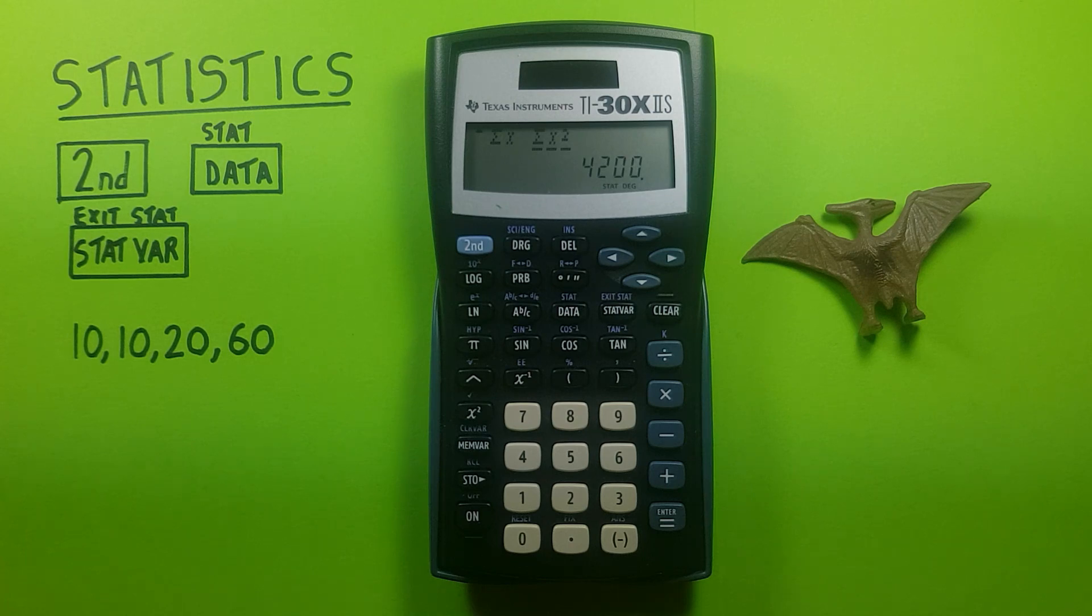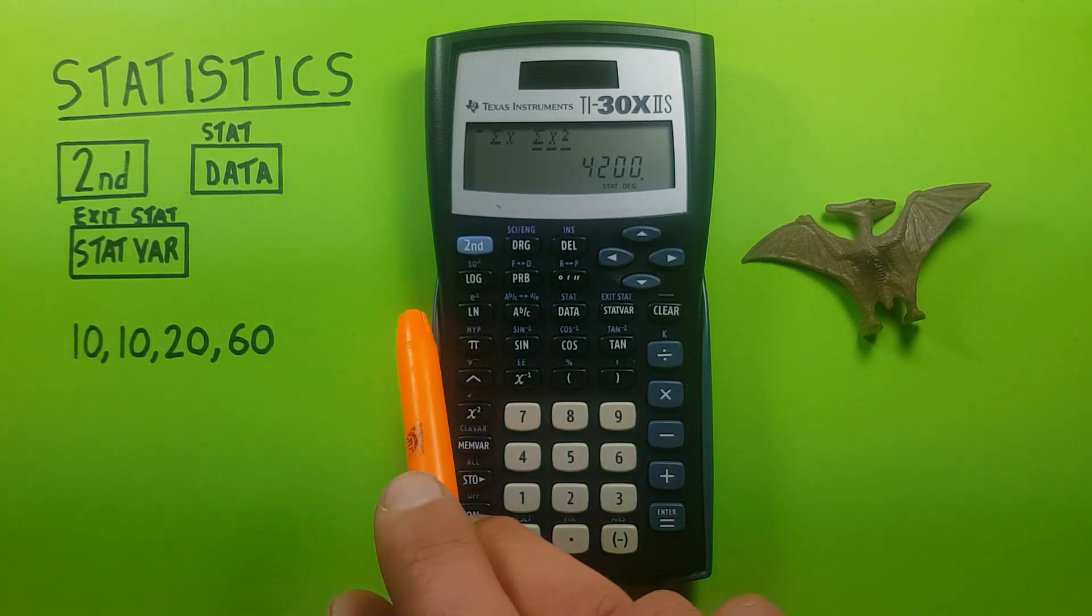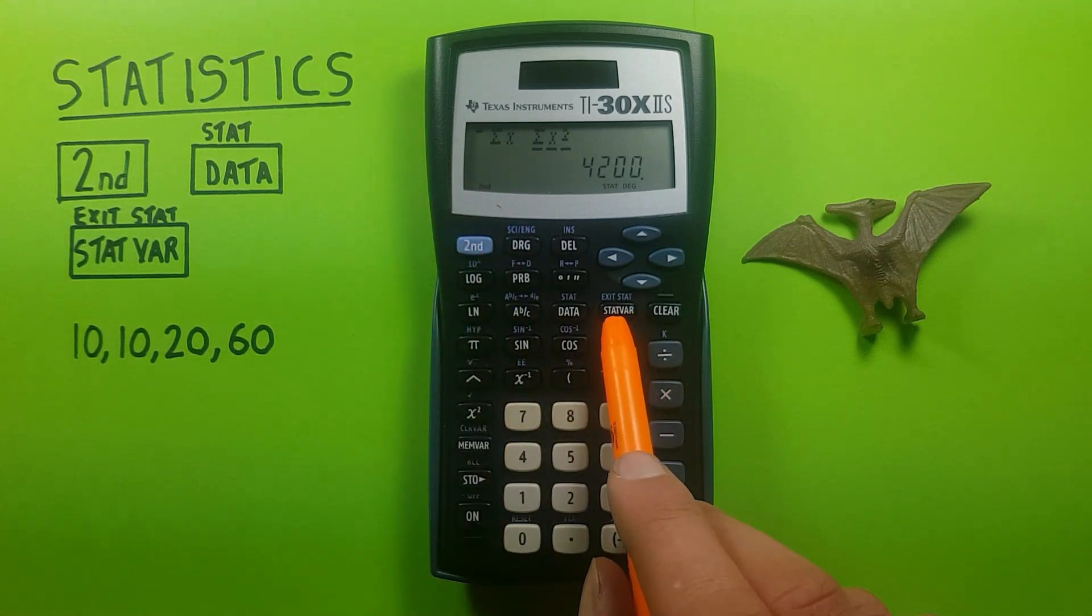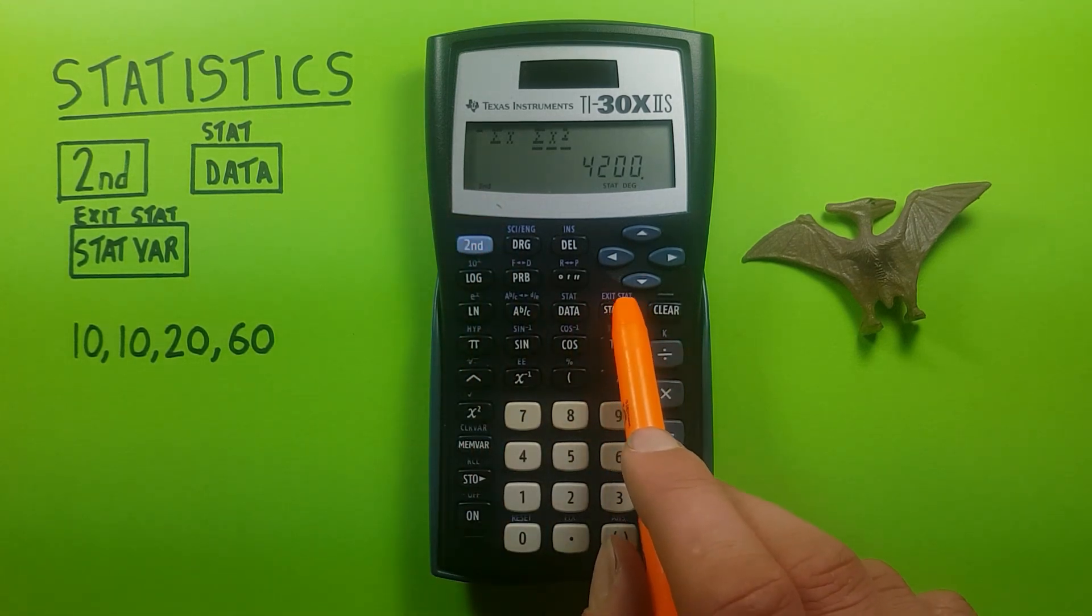Now, if we're done with this, and want to go back to our regular calculator mode, we press the second function key, stat var, which second function is exit stat.